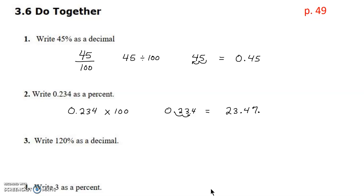For number three, we have 120% as a decimal. This is more than 100%, so as a fraction it's 120 over 100, and we can see we're going to have a decimal greater than 1. 120 divided by 100 is 1.2. You can also move the decimal two places to the left to get 1.2.